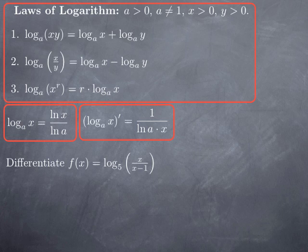Now we can apply this formula — for instance, to differentiate log_5(x / (x−1)). We may want to simplify before differentiating, because differentiating quotients can be complicated, and there is a quotient inside the log, whereas differentiating sums or differences is easy. One advantage of logs, as we saw with logarithmic differentiation, is that it transforms products into sums and quotients into differences. So we rewrite this as log_5(x) − log_5(x−1), or equivalently 1/ln(5) multiplied by the difference of the natural logs.